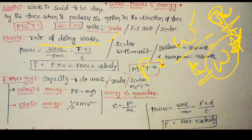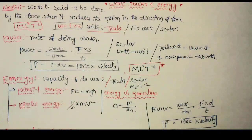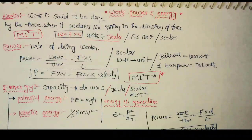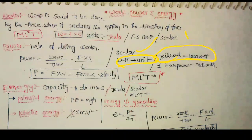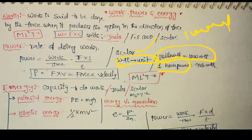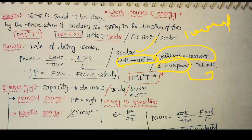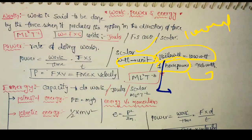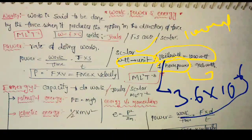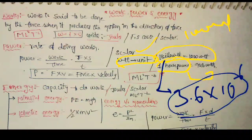The unit of power is Joules per second, which equals Watts. 1 kW is equal to 1000 W. 1 hp is equal to 746 W. 1 kWh in Joules is 3.6 × 10⁶ Joules.